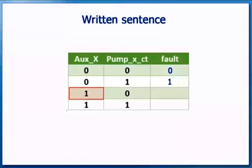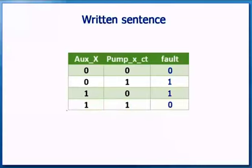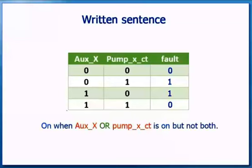If auxiliary X is on and PUMPXCT is off, then this is a fault — we show a 1. If auxiliary X is on and PUMPXCT is on, then this isn't a fault — we show a 0. Fault is on when auxiliary X OR PUMPXCT is on, but not both. You may recognise this truth table as the exclusive OR.